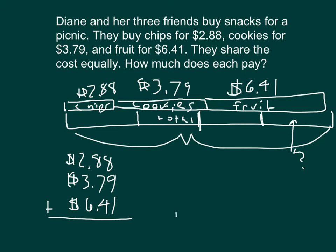Really should have written out my focus question already. My focus answer, that is, each pays so much. So let's do this in the total amount first. 8 plus 9 is 17, plus 1 is 18, 8, regroup a 1. 1 plus 8 is 9, plus 7 is 16, plus 4 is 20, 0, regroup a 2. 2 plus 2 is 4, plus 3 is 7, plus 6 is 13. So the total amount they spend on snacks is $13.08.